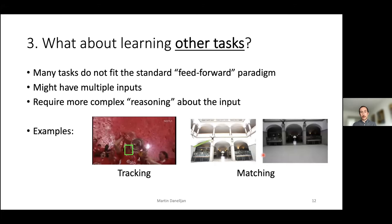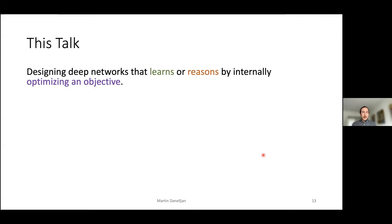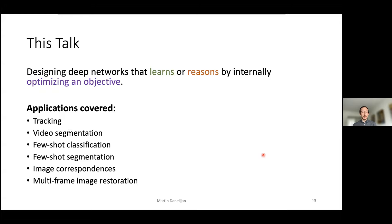In this talk, I will present how we can design deep neural networks that reason by internally optimizing an objective function. We'll look at applications such as tracking, video segmentation, few-shot classification and segmentation, and image correspondences. I also have very recent work on multi-frame image restoration — burst super-resolution and denoising — which you can ask me about if interested.